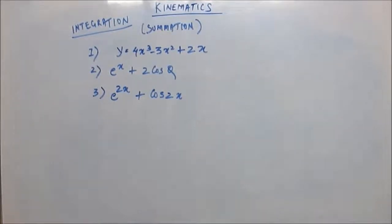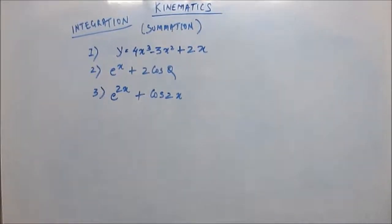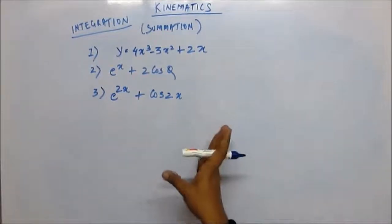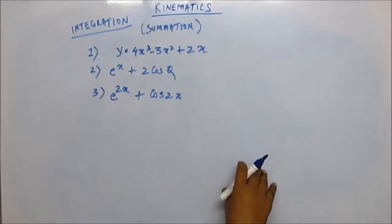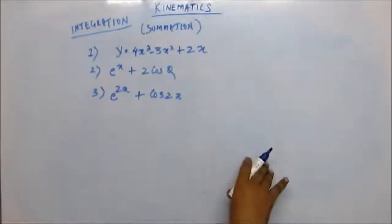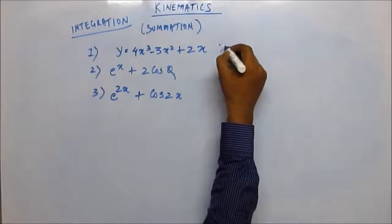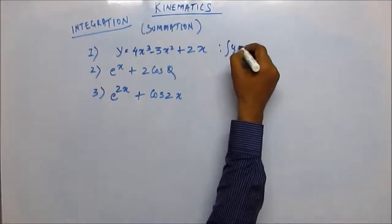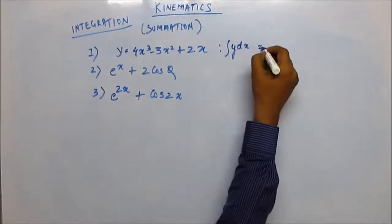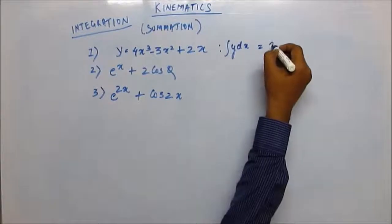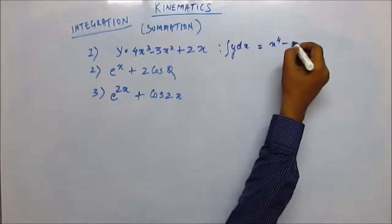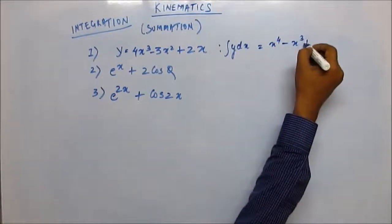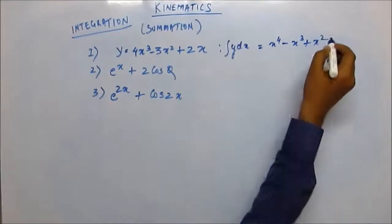For the first one, you have a direct formula, so please get your answer and then listen further — don't just keep listening, work it out. For the first one, it's pretty simple; you just have to use the direct formula of integration that we studied. So the integral of y dx will be x·e^4 minus x³ plus x².